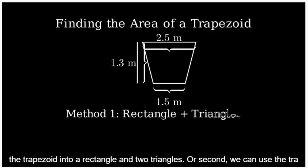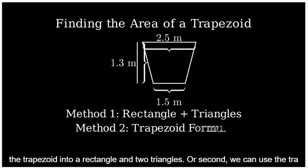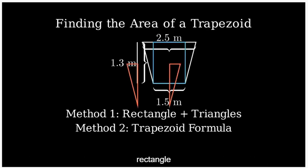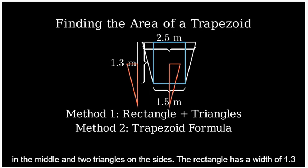First, we can split the trapezoid into a rectangle and two triangles. Or second, we can use the trapezoid area formula directly. Let's try the first method. We can split our trapezoid into a rectangle in the middle and two triangles on the sides.